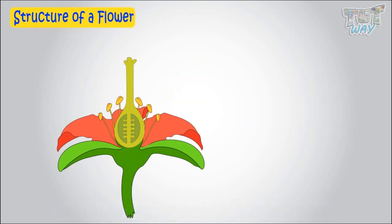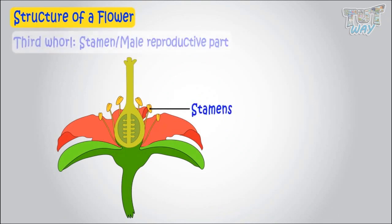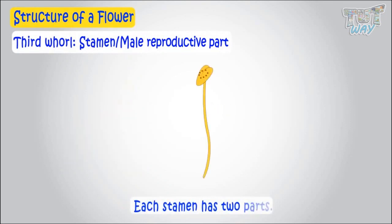Third and fourth whorls are the reproductive parts of the flower. Third whorl consists of male reproductive parts called stamens. Each stamen has two parts, anther and filament.